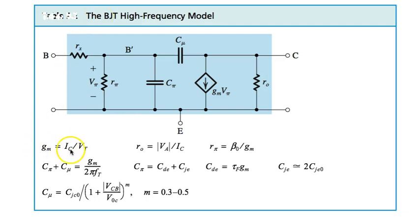Now for the BJT high-frequency model: Gm equals IC over VT. Cπ plus Cμ over 2π ft, rπ is βVT over IC. Cπ is τf Gm. This is depletion, this is junction capacitance. Depletion capacitance is in reverse bias region and junction capacitance is in forward. Cμ is Cj0 1 plus VCB over V0 to the power minus m, where m is 0.3 to 0.5.